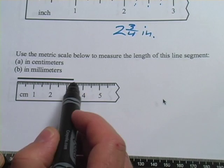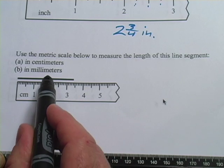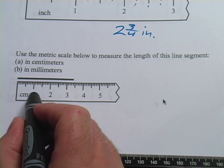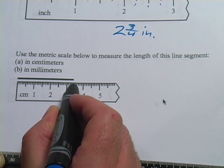And what they want us to do in this is measure the length of this line segment, both in centimeters and in millimeters. If I want to do this in centimeters, I've got one, two, three, and it looks like one, two, three, four millimeters.